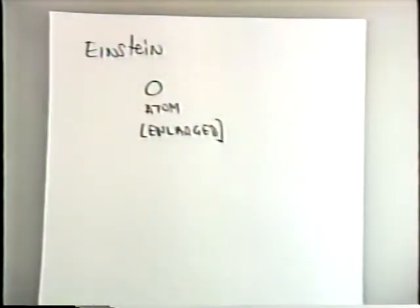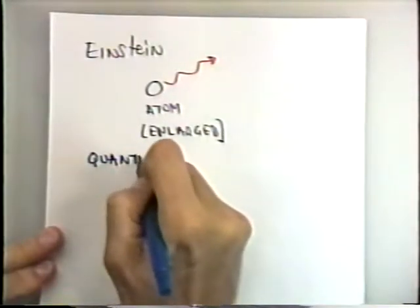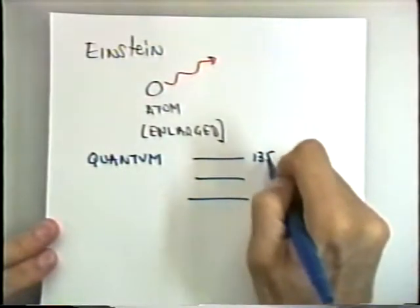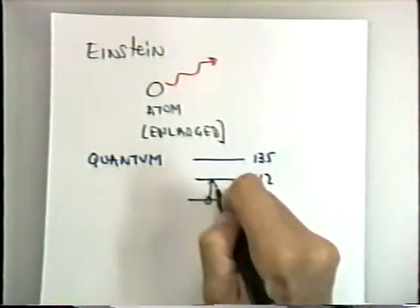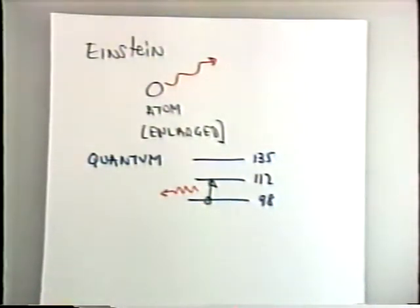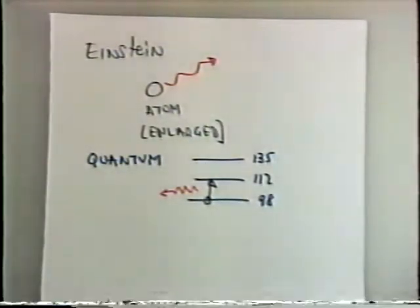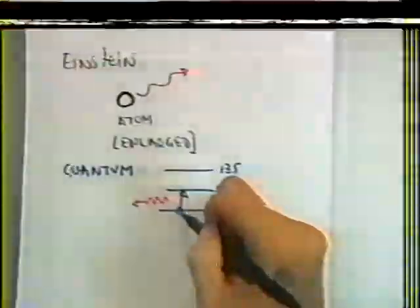When an atom moves from one energy level to another, light comes off, which is exactly equal to the energy difference between the two states. One of the things Einstein showed was that not only if you wait long enough does this happen randomly, but also if light comes by that is similar in energy, it can stimulate emission. So the light output is stimulated by incoming light.